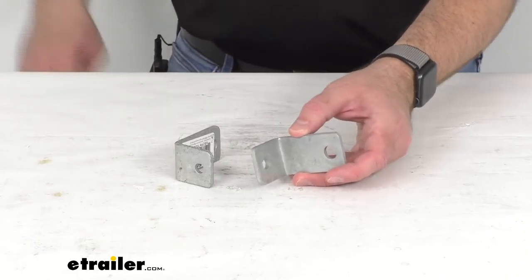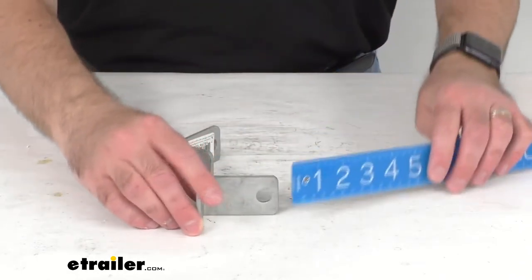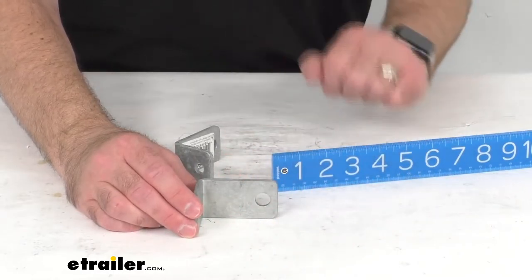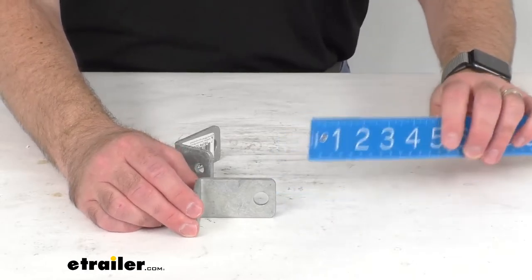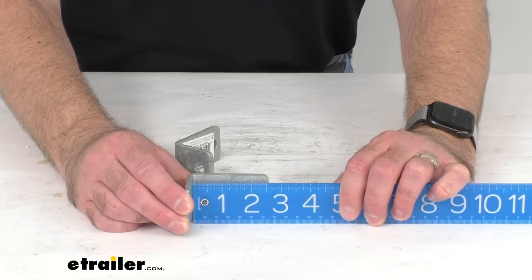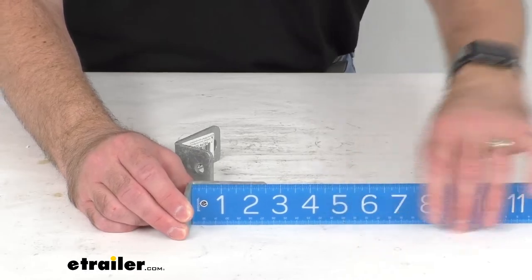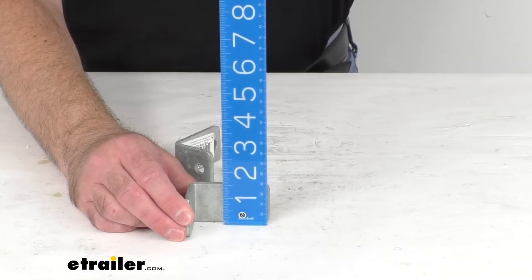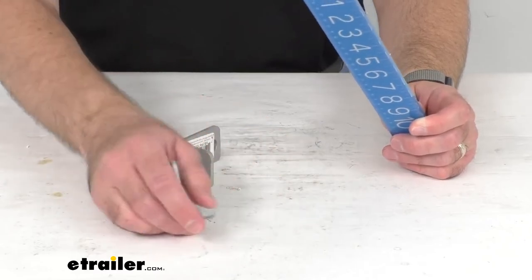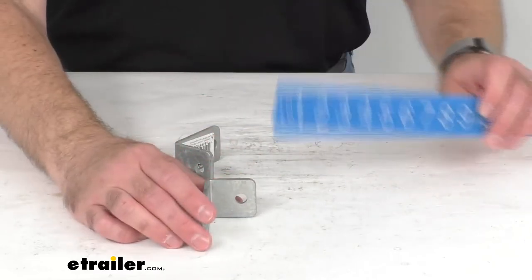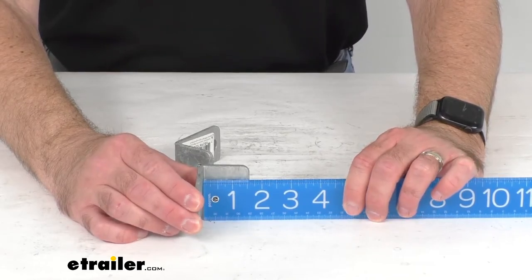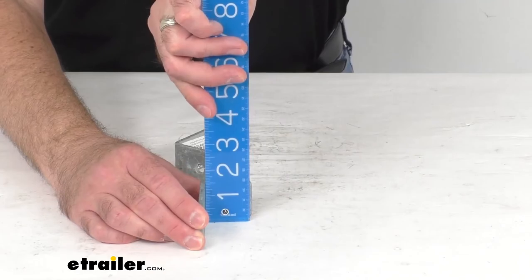Let me pull out my ruler and give you some overall measurements. I'm going to measure the inside length of the longer side of this bracket first. It looks like we're sitting at about two and a half inches long, and the width is an inch and a half. The inside length on the shorter part of this bracket is right at an inch and a half, and again the width is an inch and a half as well.